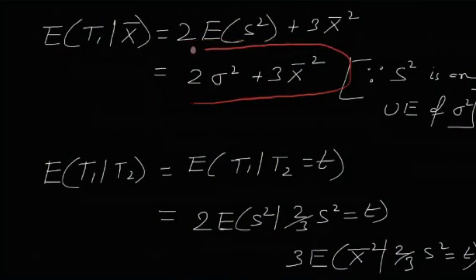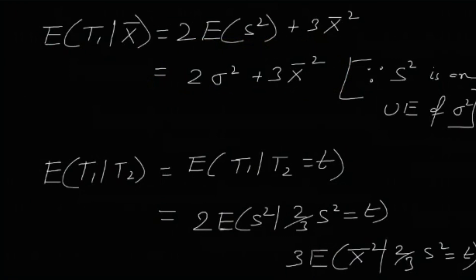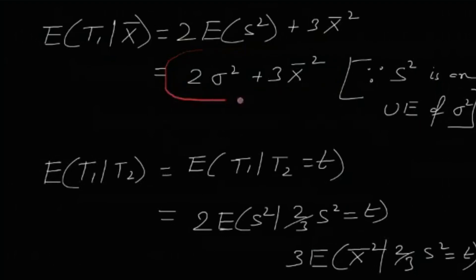This result is a function of x̄, as expected, since a conditional expectation is not a constant — it is a function of the random variable on which it is conditioned. So E[t1 | x̄] = 2σ² + 3x̄².